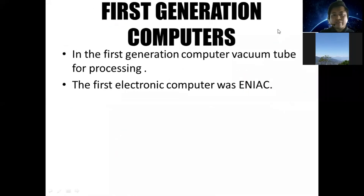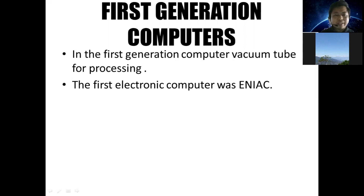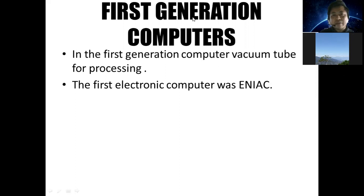The first generation of computers started from 1951 to 1958. You can see in your notebook — the first generation computers used vacuum tubes for processing data. The first electronic computer was ENIAC. Using vacuum tubes, you input data, tell the computer to process it, and then get the output.